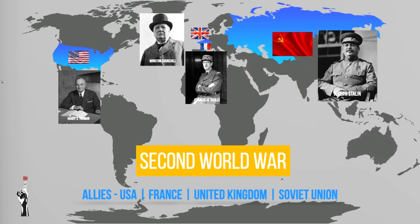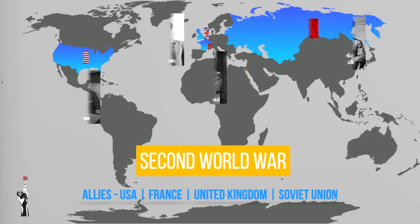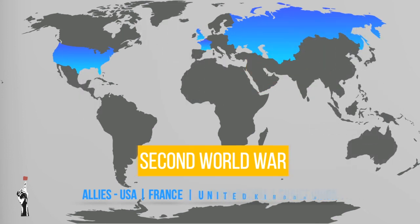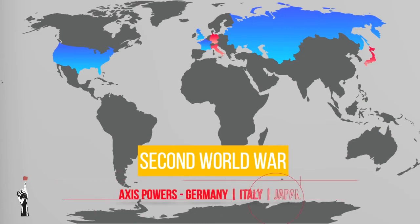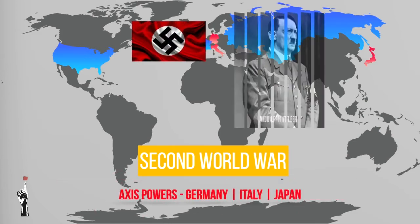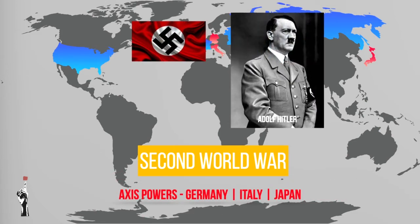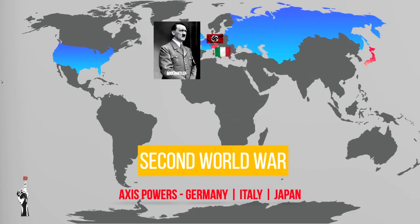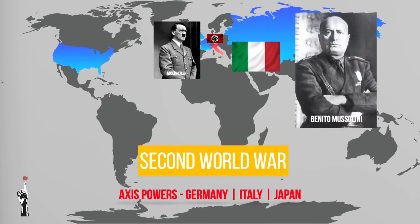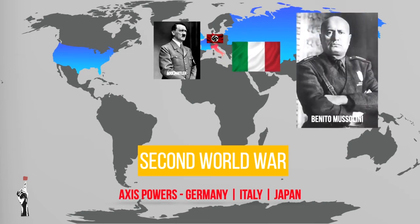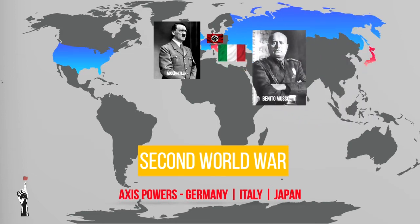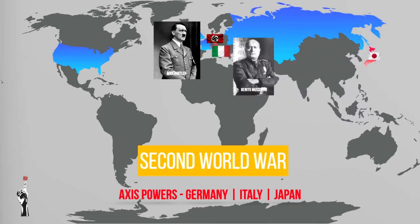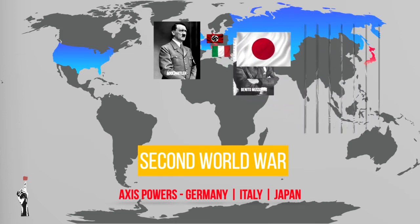Let's look at the leaders of the Axis powers during the Second World War. The leader of Nazi Germany was Adolf Hitler. Of Italy, Benito Mussolini. And the Emperor of Japan, Hirohito.